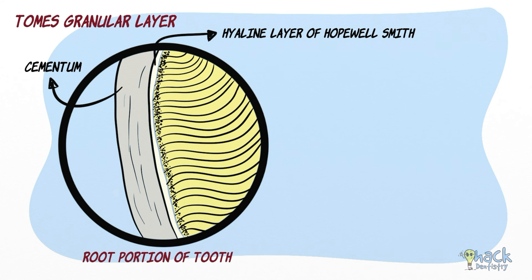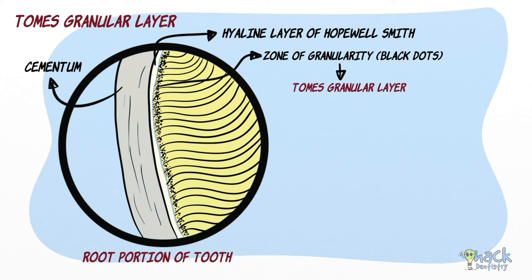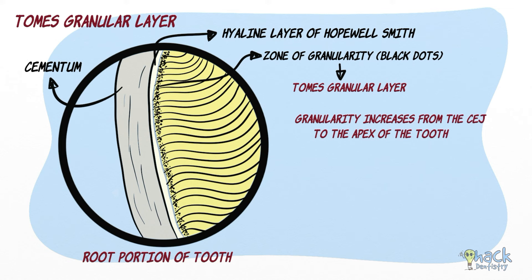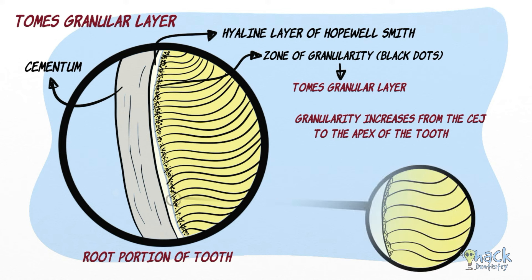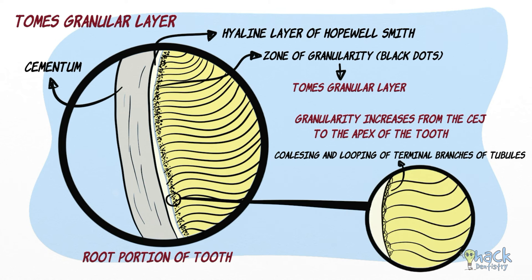When root dentine is viewed under transmitted light, there is a zone of granularity in the dentine just below the cementum, called Tomes' granular layer. The granularity of this layer increases from the cementoenamel junction towards the apex of the tooth. Tomes' granular layer is believed to be due to the coalescing and looping of terminal branches of the dentinal tubules. This layer of granular dentine is also hypomineralized compared to the circumpulpal dentine.